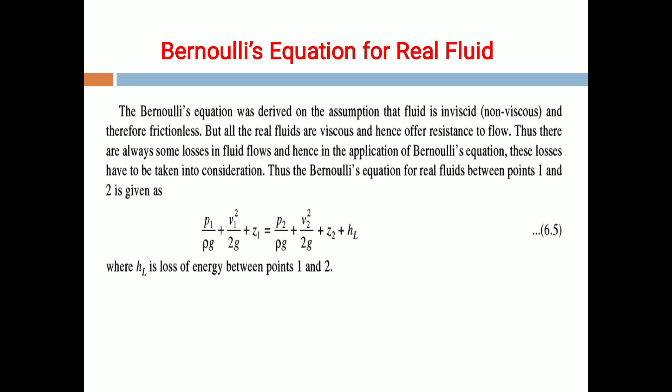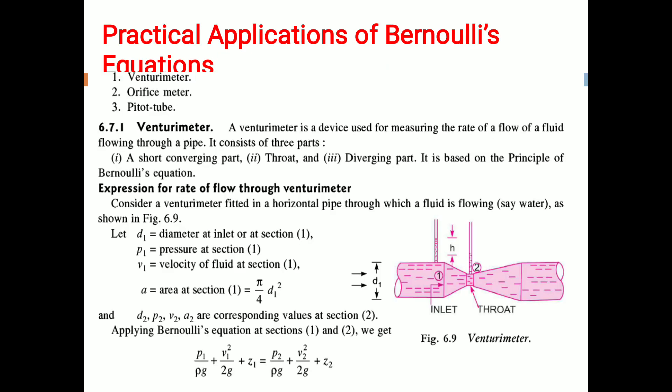The Bernoulli's equation for real fluid between points 1 and 2 is given as: P1 by rho G plus V1 squared by 2G plus Z1 equals P2 by rho G plus V2 squared by 2G plus Z2 plus HL, where HL is the loss of energy between points 1 and 2.